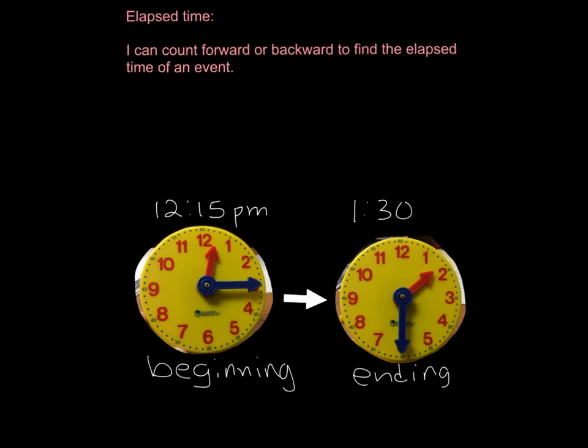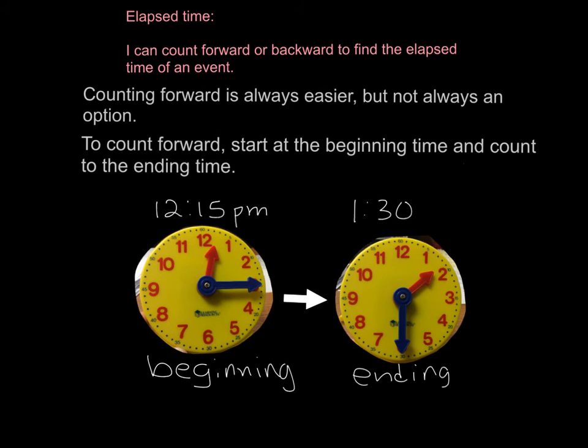So to count forward, I have to start at the beginning time to my ending time. So everybody on your clocks, go to 12:15. Let's go to the beginning time. So here you can see my steps. I'm going to start with two simple steps. Counting forward, of course, is always easier. It's not always an option. Sometimes I don't know when it ends. But in this situation, I do. So counting forward is what I'm going to choose because it's always easier. To count forward, I have to start at the beginning time. So I'm always going to find the beginning time and put my clock there, start there. And then I'm going to count to the ending time. I'm going to count forward to the ending time.